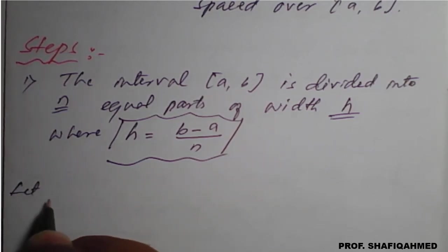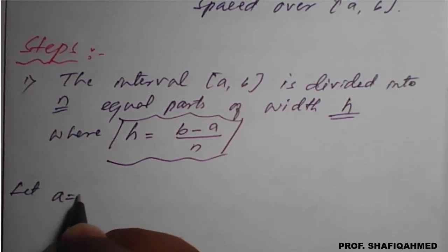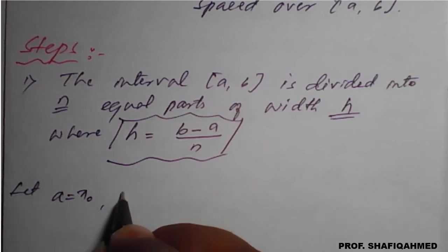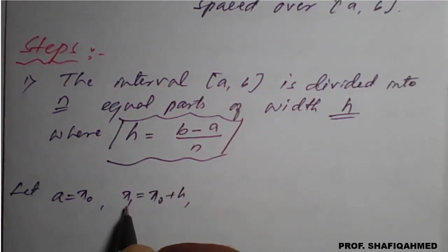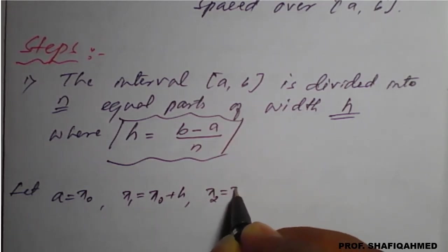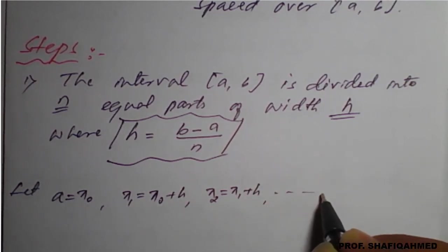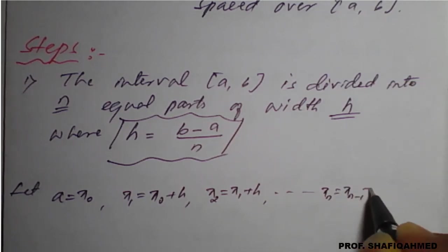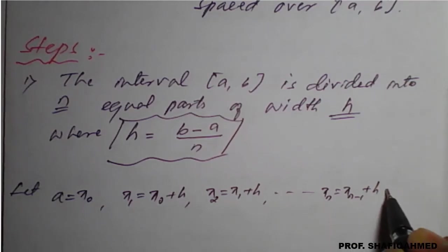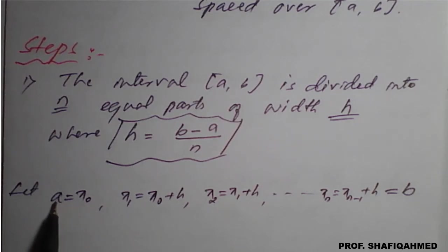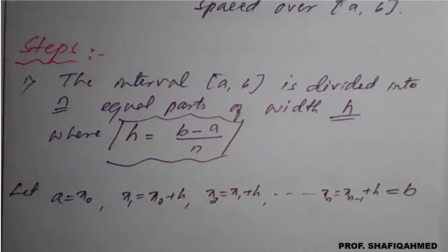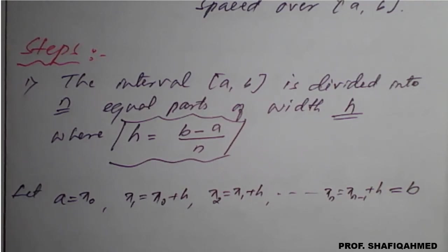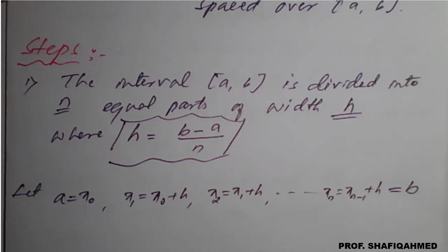We consider the lower limit value a as x₀. Then x₁ equals x₀ plus h, and x₂ equals x₁ plus h, which is x₀ plus 2h. Similarly, xₙ equals xₙ₋₁ plus h. The last term xₙ is considered as b. So the x values range from a to b, that is from x₀ to xₙ, placed equally in n equal parts.